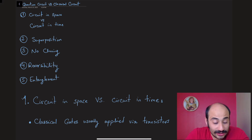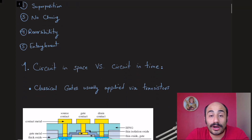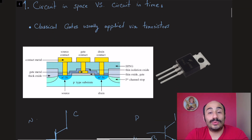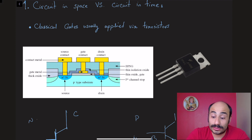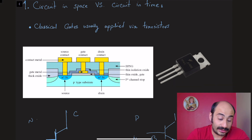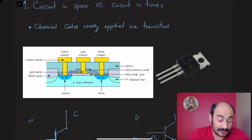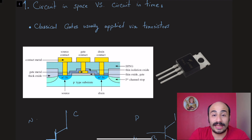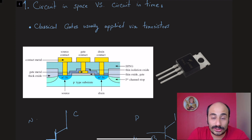Classical circuits are usually implemented with transistors. To avoid making the video too long, I'm not going to discuss the details of transistors, but I'll post links to good videos explaining how they function. What I'll mention here is that a transistor typically has three legs and consists of semiconductors — either PNP (positive-negative-positive) or NPN — showing the nature of the doping in the semiconductor.